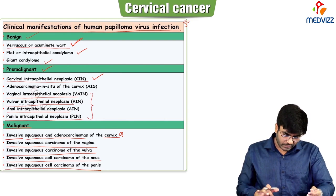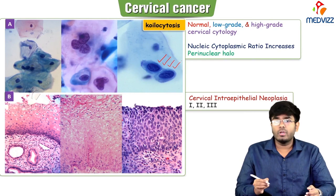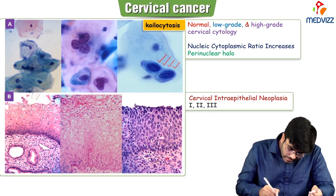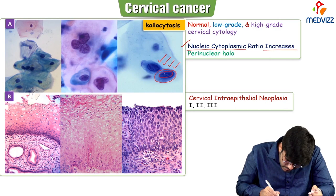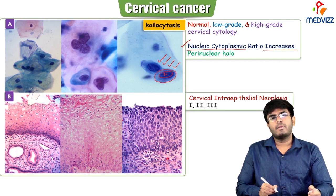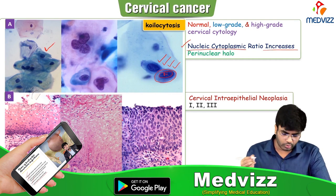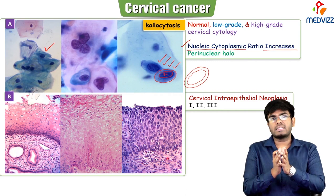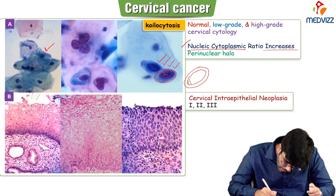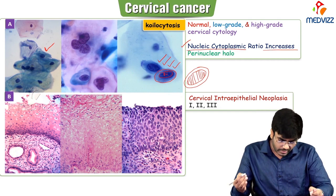Koilocytes are the dysplastic cells where the nuclear-cytoplasmic ratio increases and you can see a perinuclear halo. In a normal cervical epithelial cell the cytoplasm is normal, but in koilocytes the nucleus is very big and the cytoplasm is pushed to the periphery. These koilocytes are seen in cervical intraepithelial neoplasia as well as cervical cancer.